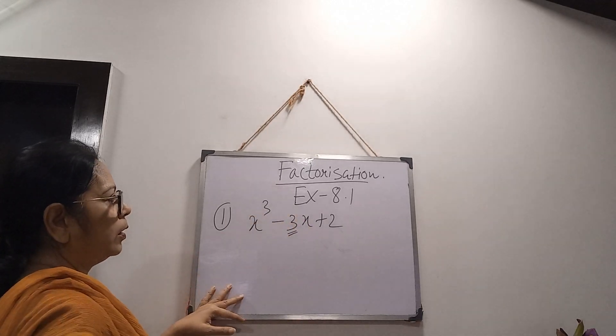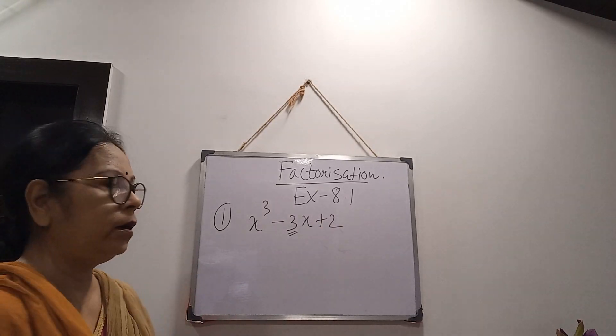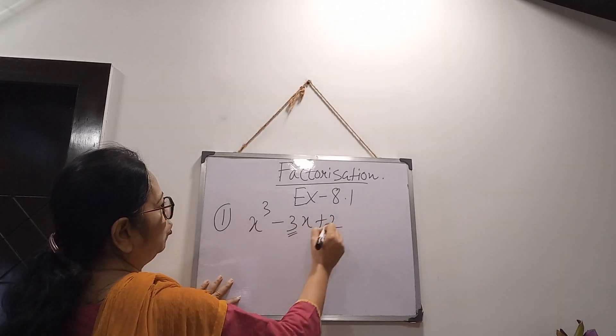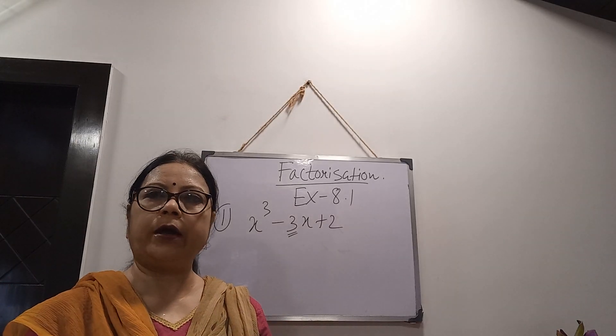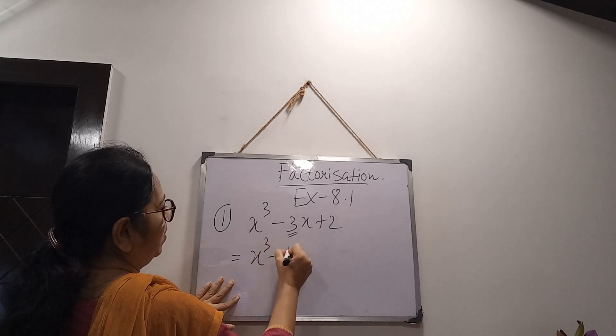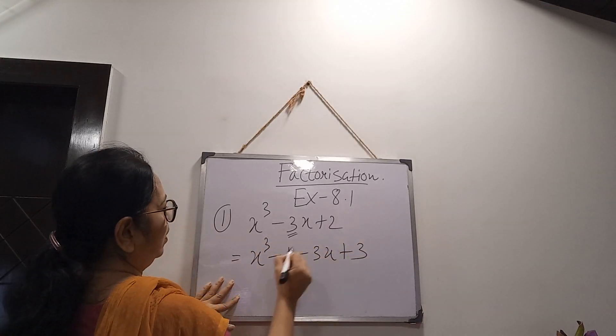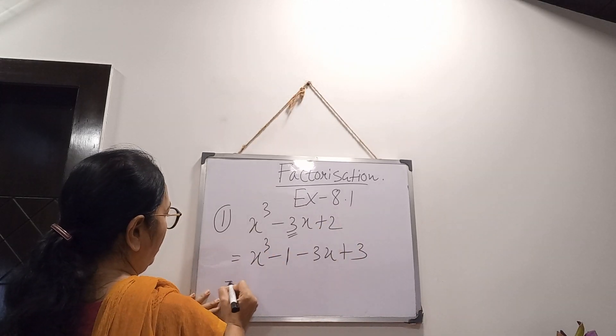See, there is 3. So you will make the constant term also 3. How? Now, I have to add 1. 2 plus 1, it will become 3. But when I am adding 1, then I have to adjust also. So here I am adjusting minus 1. Now see, here I have added 1 and here I have subtracted 1. So it is adjusted 3 minus 1, 2.